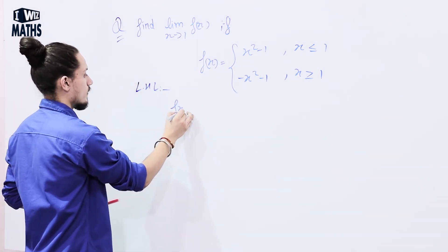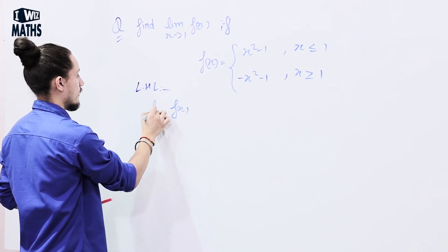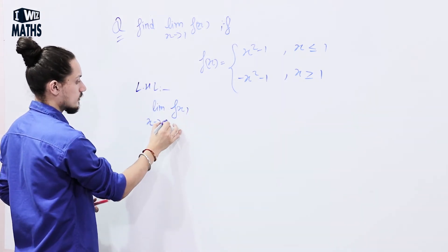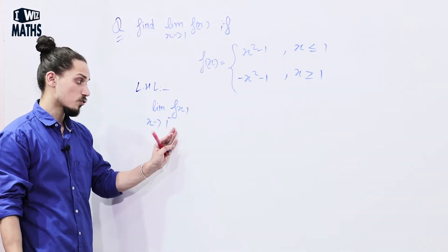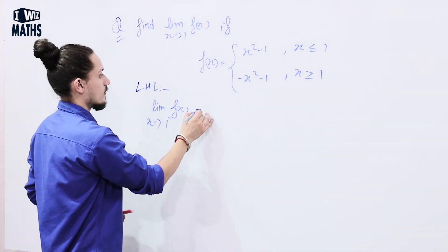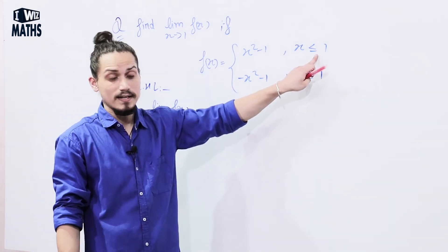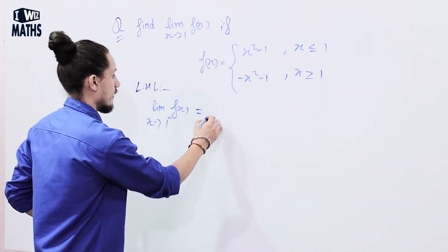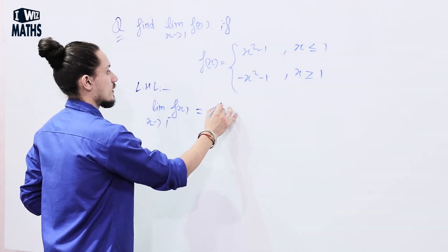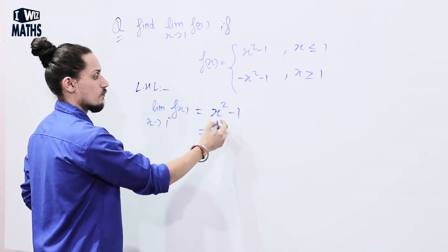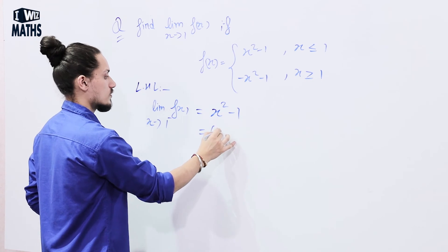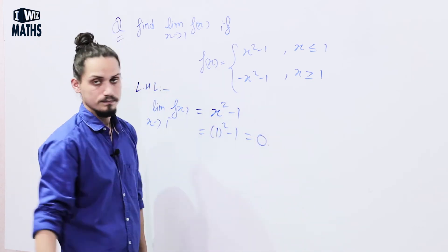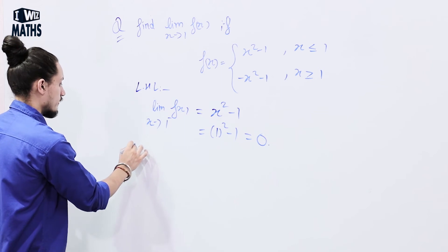Left hand limit: lim (x → 1⁻) f(x). Since x is less than 1 here, we use x² - 1. Putting x = 1: 1² - 1 = 0.